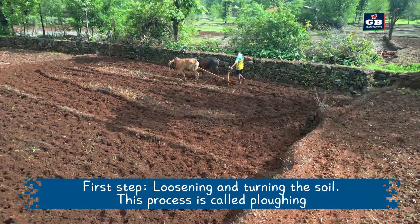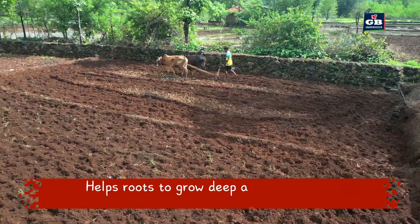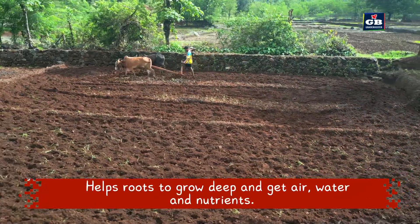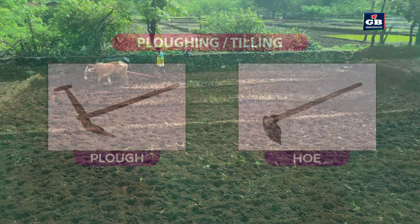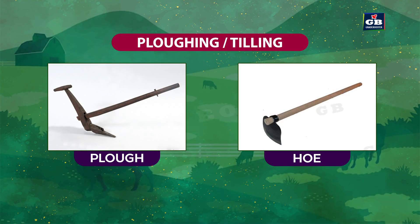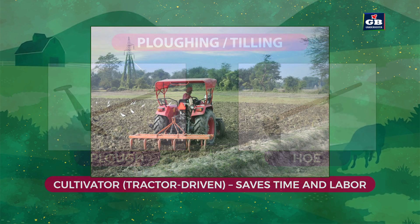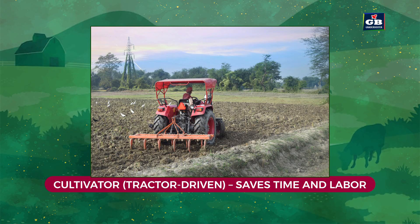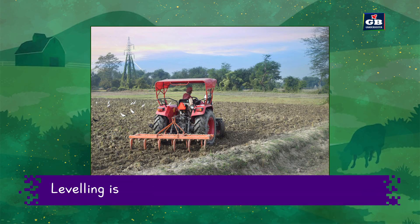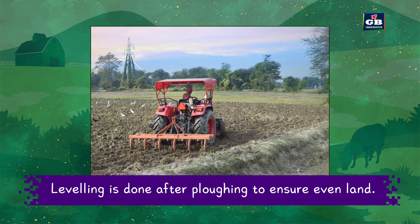This process is called ploughing, also known as tilling. It helps roots to grow deep and get air, water, and nutrients. It is done using different tools. A plough — either wooden or iron — has been used since ancient times. A hoe removes weeds and loosens the soil. A cultivator is driven by a tractor and saves time and labor.